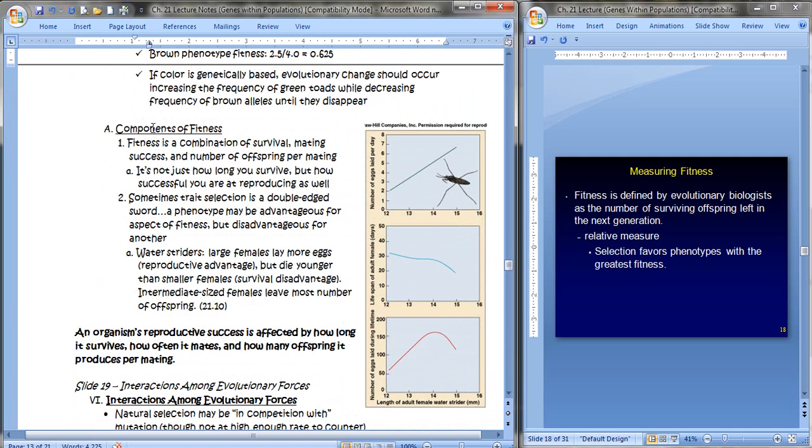So what are the components of fitness? Fitness is a combination of survival, mating success, and number of offspring per mating. It's not just how long you survive, but how successful you are at reproducing as well. And sometimes trait selection is a double-edged sword. A phenotype may be advantageous for one aspect of fitness, but disadvantageous for another. And here's a great example of that, water striders. And these are three graphs that if you were to overlay them, they would really show you the principle that we've understood here.